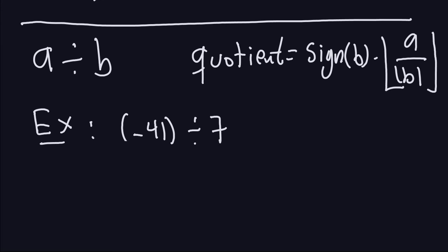In the previous video, we saw how to use this formula — sine of B times the floor of A divided by B — to compute the quotient of the division of two integers A and B. Now, you cannot use this formula when either A or B is negative, because if A and B are both positive, you just use the usual way you learned in primary school. So let's look at this example.